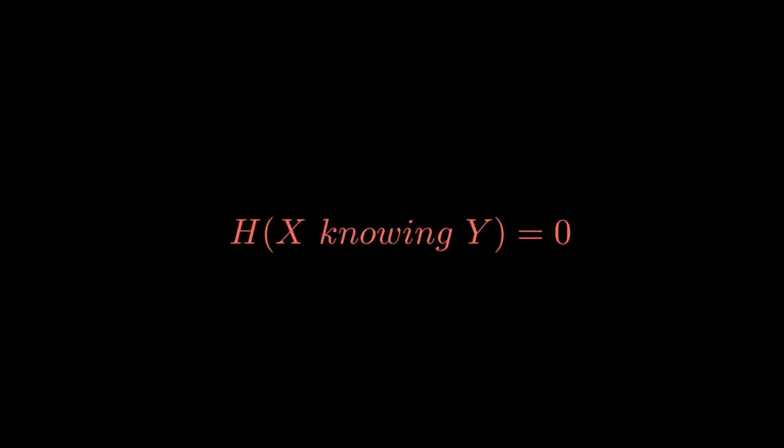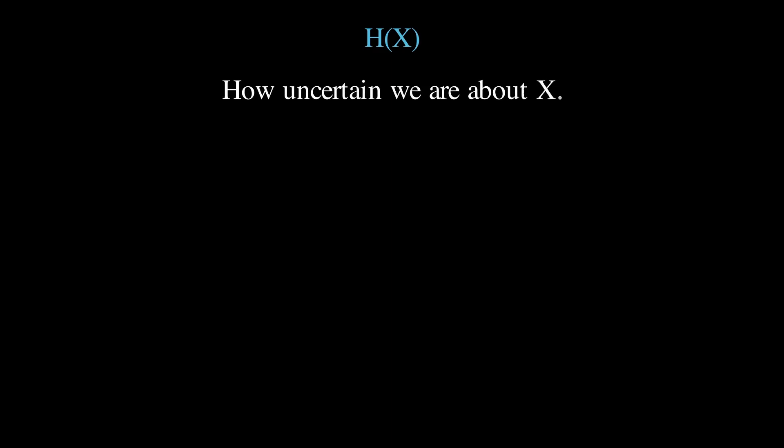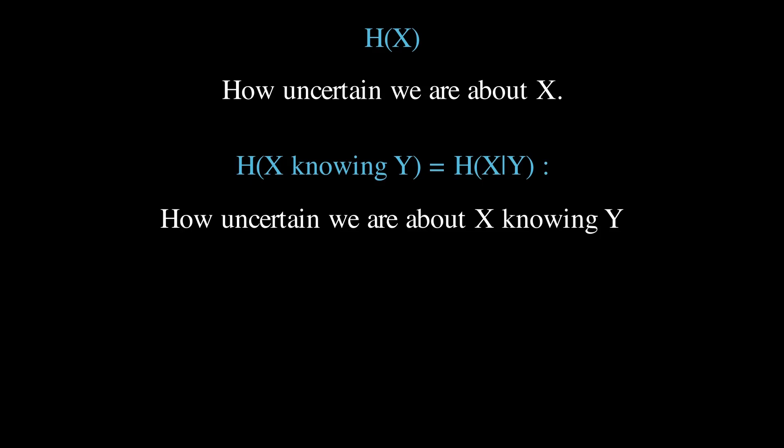On its own, yes, x has entropy. But knowing the context y, x doesn't tell you anything new. Because the context did most of the work. This is called conditional entropy. Regular entropy tells us how uncertain we are about x in general. But conditional entropy written h of x bar y tells us how much uncertainty is left about x once you already know y. In other words, how many bits do I still need to figure out x if I already know y. A quick example.